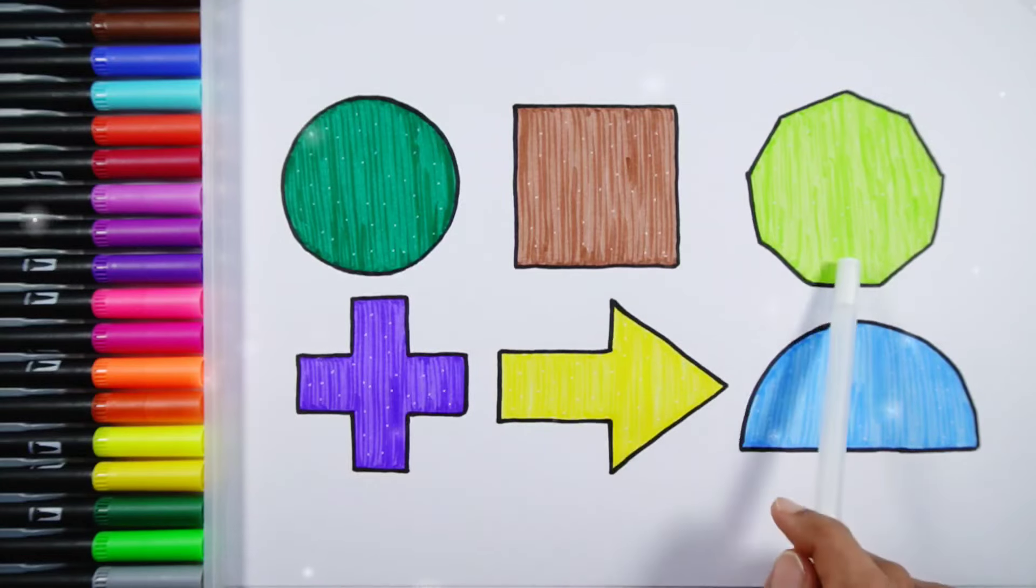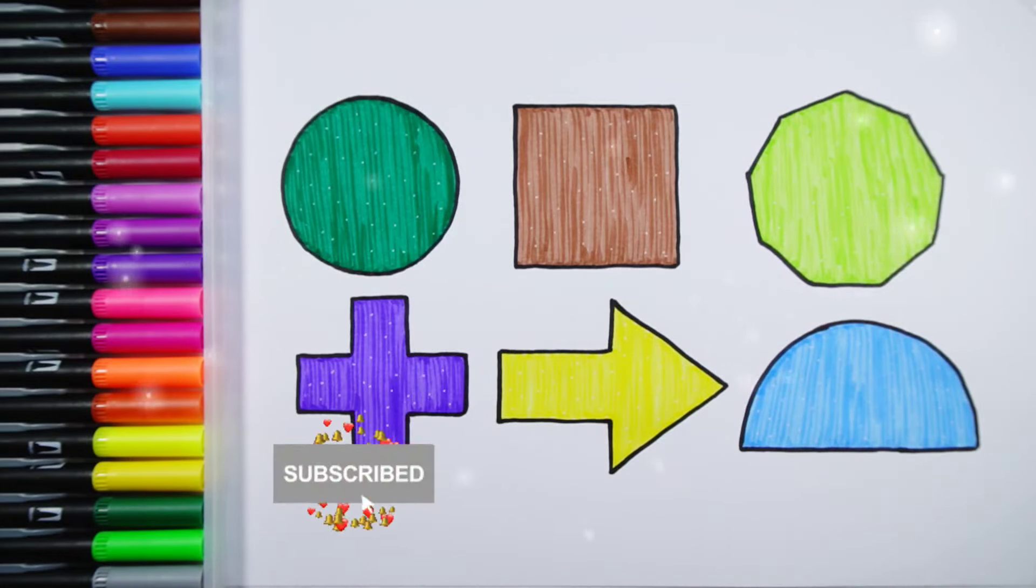Circle, square, nonagon, cross, arrow, semicircle. Thank you so much for watching. Don't forget to like and subscribe. See you next video. Bye.